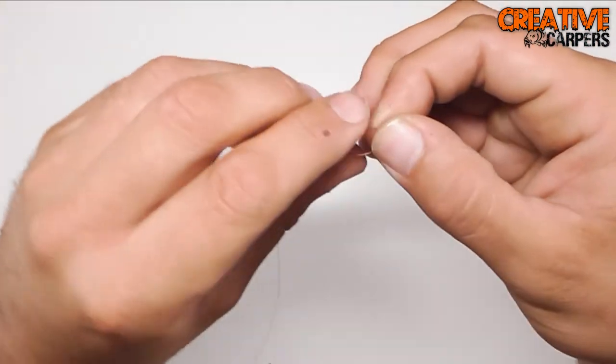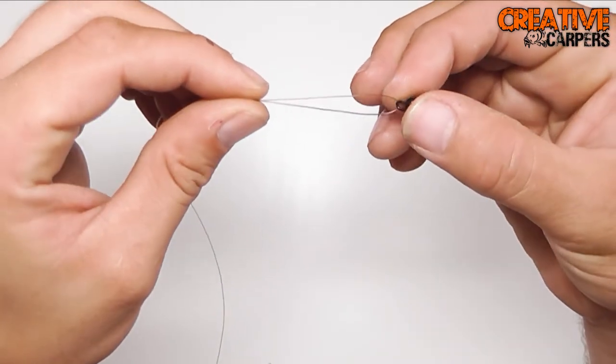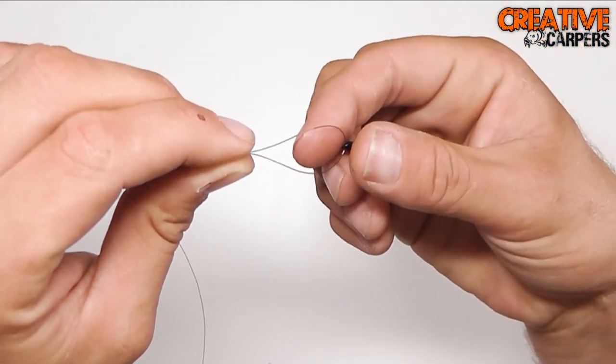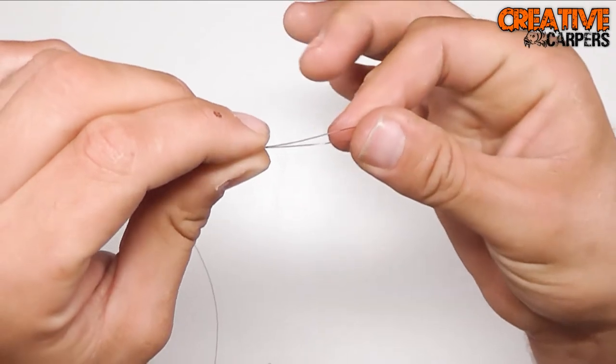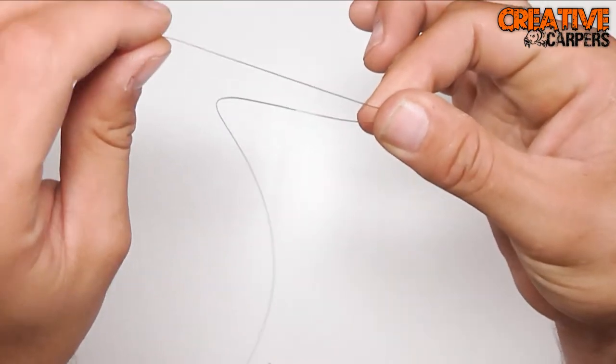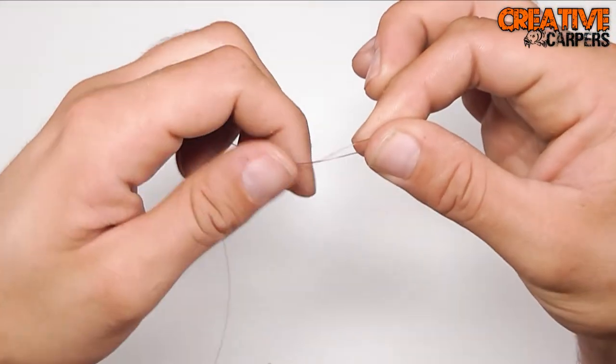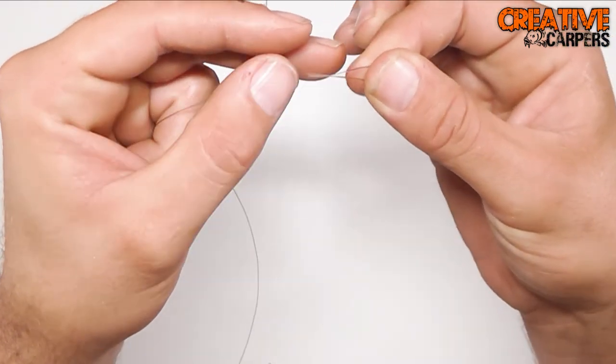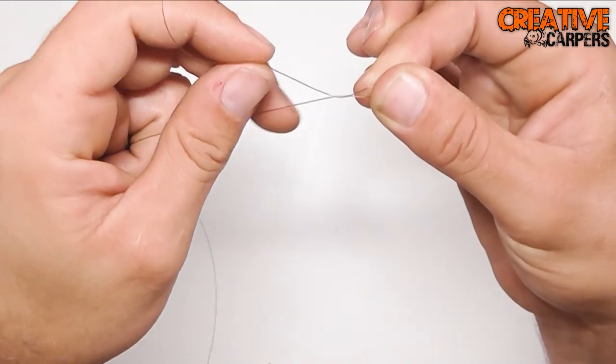Pull that down so you've just got a fold going around like that, just one through the eye. What I like to do then is just clamp the swivel and a part of the line, and what that does is it actually makes a small loop at the top there which you're going to go back through with the tag end.